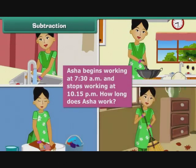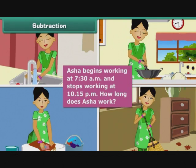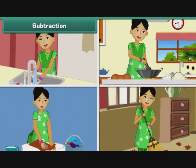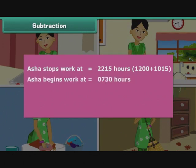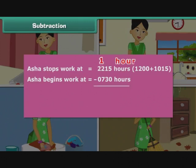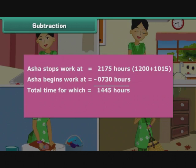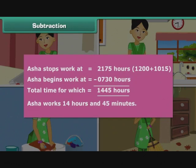Ashish begins work at 7.30 a.m. and stops working at 10.15 p.m. How long does Ashish work? We first express the times using the 24-hour clock. Ashish stops work at 22.15 hours, that is 12.00 plus 10.15. Ashish begins work at 0730 hours. We cannot subtract 30 from 15, so we borrow an hour, add 60 minutes, and subtract 1 from hours. Therefore, Ashish works 14 hours and 45 minutes.